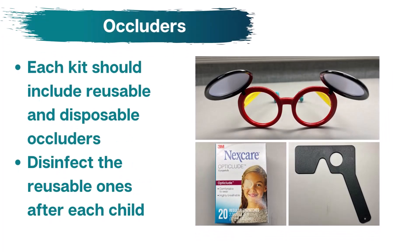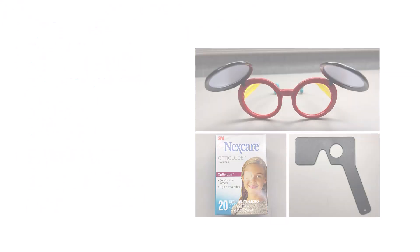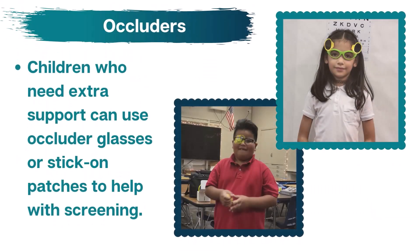Each kit should include reusable and disposable occluders. Remember to disinfect the reusable ones after each child. You may find that some children have difficulty keeping the occluder on their eye — proper placement is important to ensure the screening is accurate. For children who need additional assistance holding the occluder, consider using occluder glasses with flip-up covers or stick-on patches, or having an adult assist the child in holding the occluder.